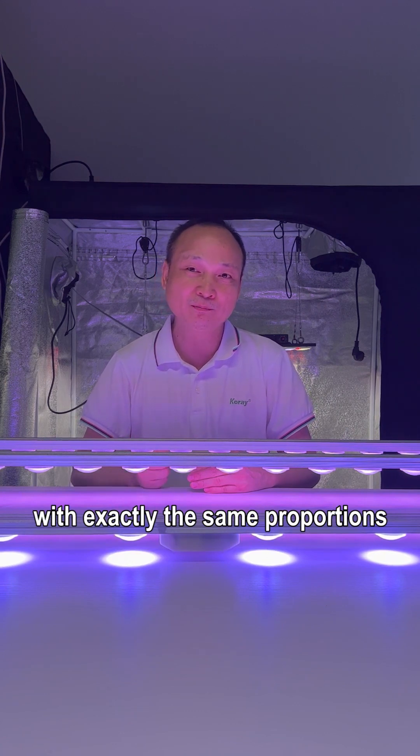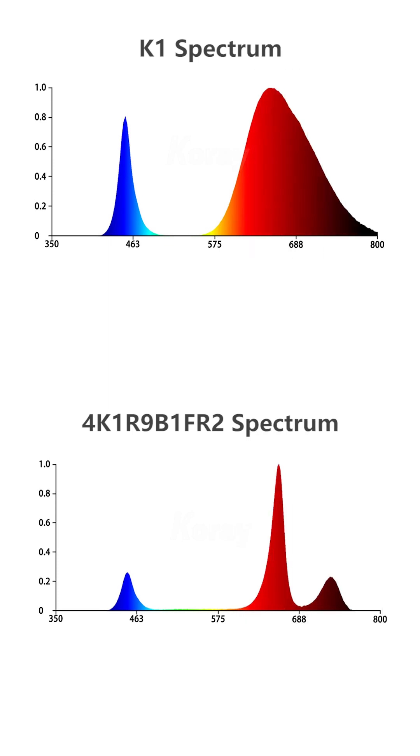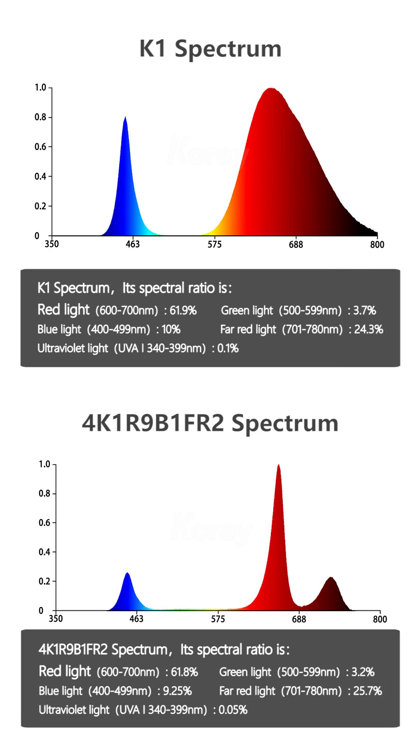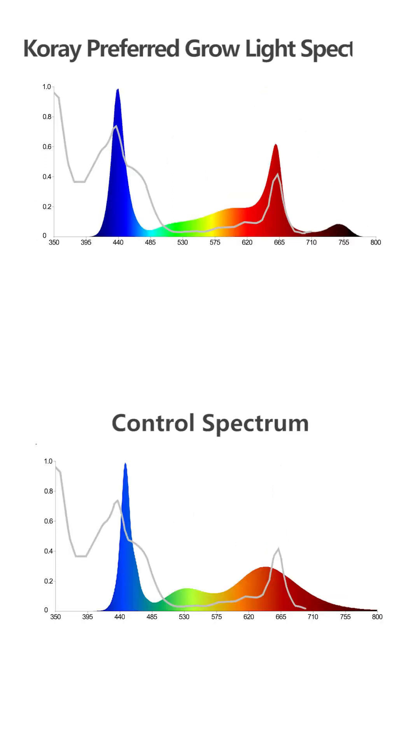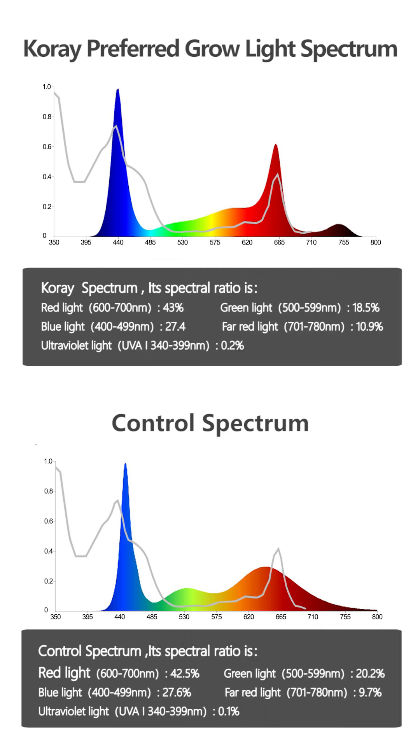For example, these two spectra have almost the same ratios of red, green, blue, ultraviolet, and far-red light, but their spectral charts are very different. This causes big differences in plant cultivation effects. Therefore, just a ratio of red, green, and blue cannot be used to describe the plant light spectrum.